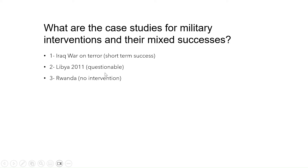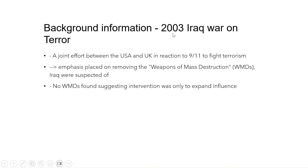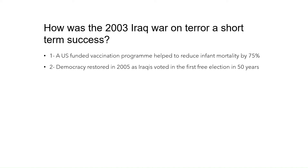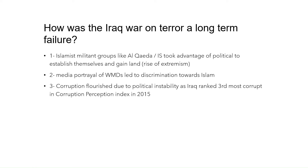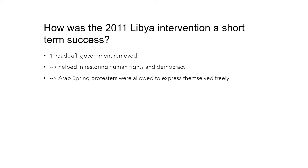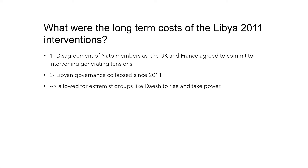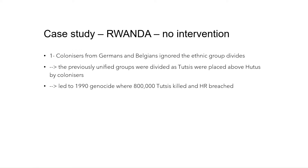These three cases are different in the sense that the Iraq War on Terror had a short-term success, Libya in 2011 was questionable, and Rwanda is an example of what happens when there's no military intervention. You can pause and read the background on the 2003 Iraq War, how it was a short-term success and a long-term failure, the Libya intervention's success and long-term failure, and Rwanda's case showing how the lack of intervention led to so many deaths.